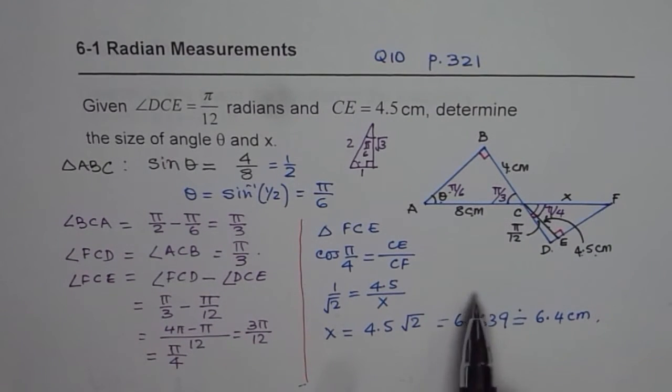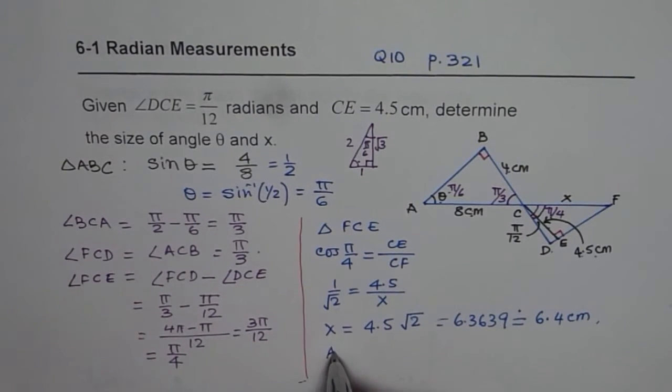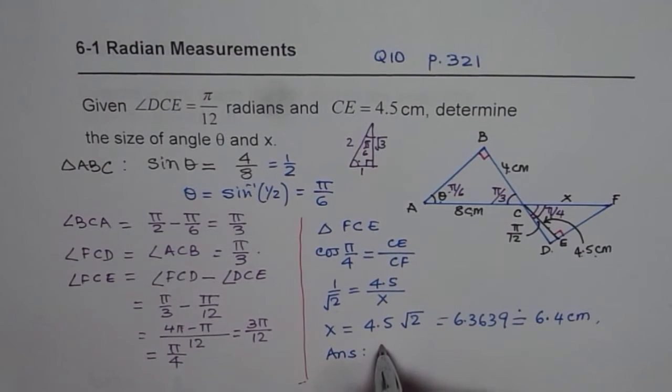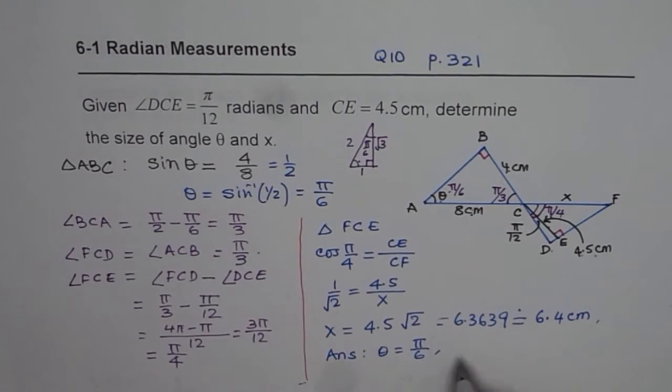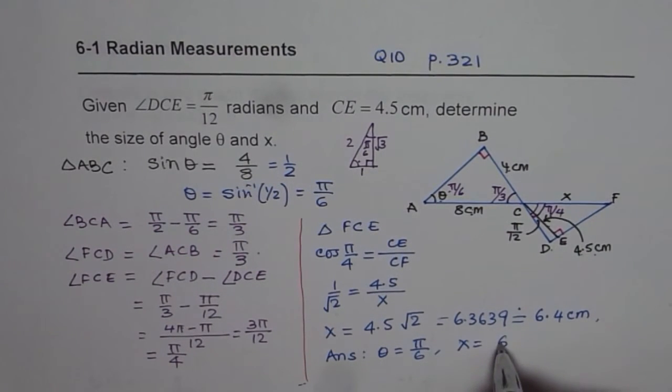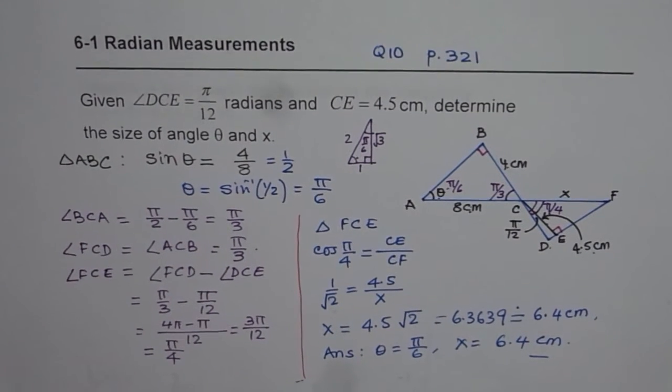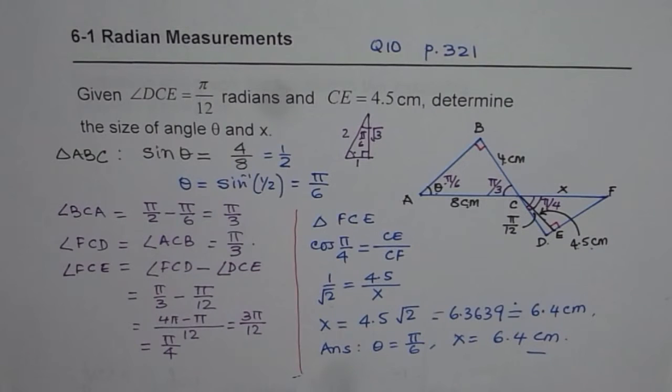So we found x and the angle θ. Our answer is angle θ for us is π/6, and x is equal to 6.4 cm. So that is how you can solve this question. Go through these steps once again. Understand the strategy. Make use of special triangles to immediately get the answers. You can also use your calculator, but your calculator setting should be in radians. I hope that helps. Thank you and all the best.